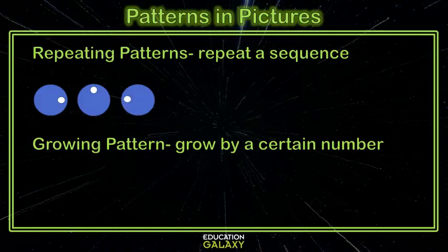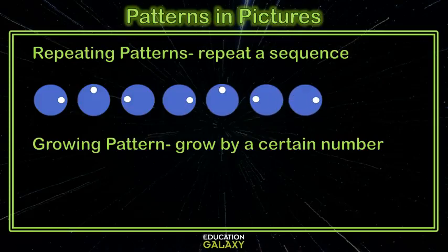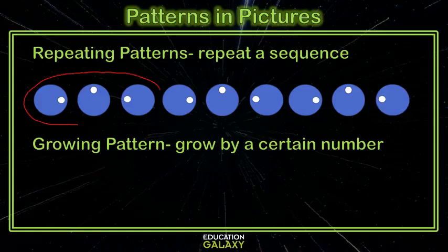If we repeat that pattern, circle with a dot on the right, then up, then left. Right, then up, then left. Our pattern repeats those first three terms over and over again.